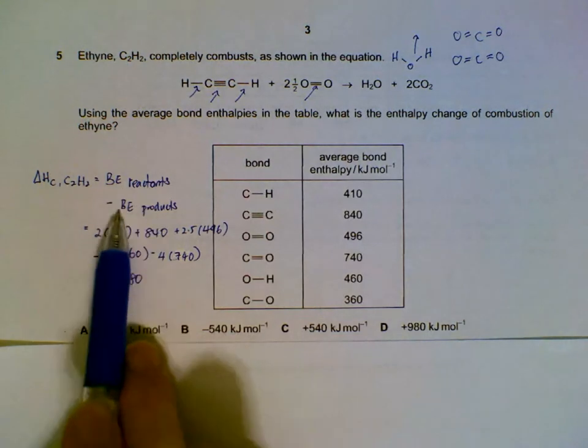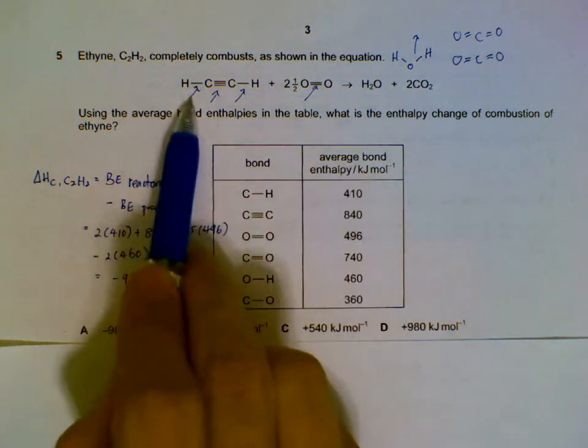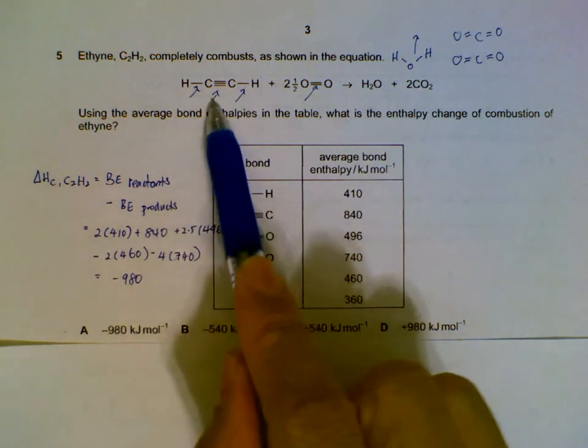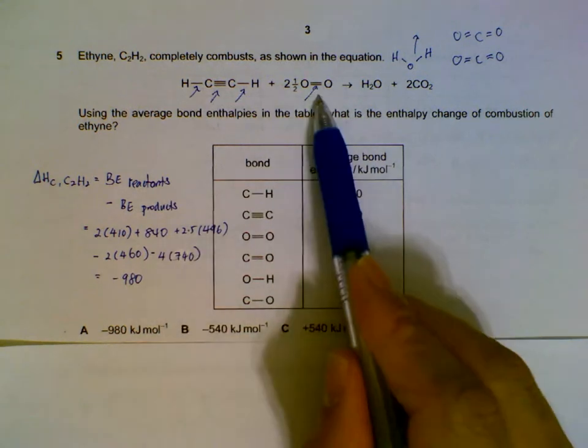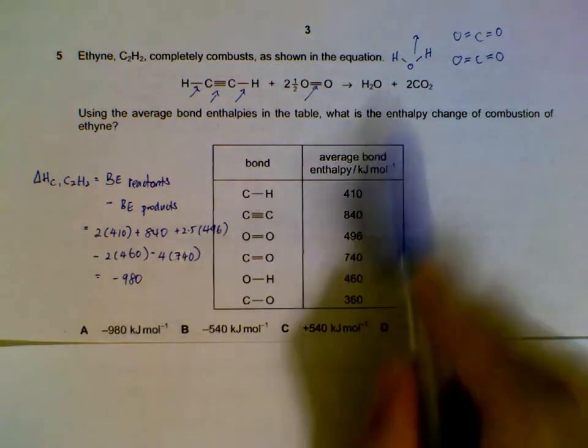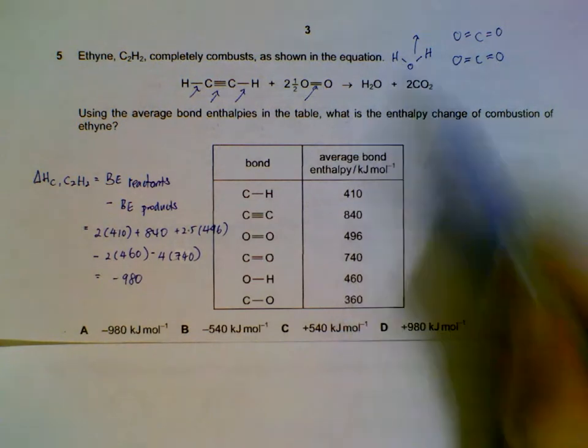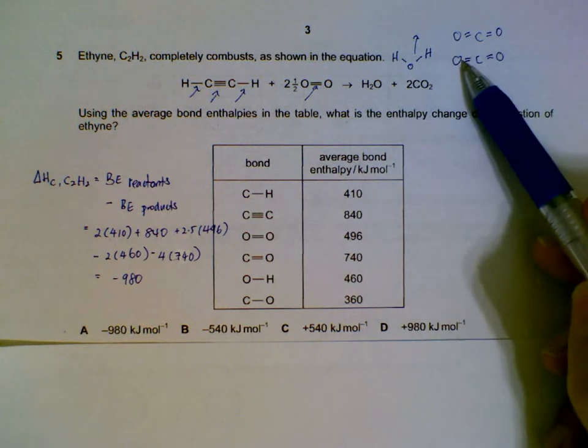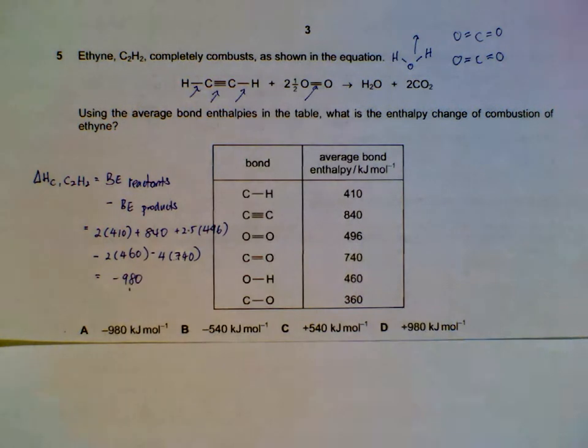So 2 multiplied by 410, and 840. 2.5 of oxygen, which is 496 each. So this is your reactants. And then we subtract the products: 460 for water times 2, 740 for carbon dioxide multiplied by 4. Reactants minus products will be the heat of reaction. In this case, it is also heat of combustion.